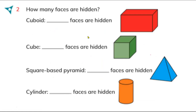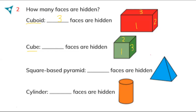Now in this exercise you have to find how many faces are hidden. Look at the cuboid — how many faces can you see and how many are hidden? I can see one, two, three faces for this cuboid, so three faces are hidden. Now here is the cube — all sides are equal. How many faces can you see? One, two, and three — and three faces are hidden.